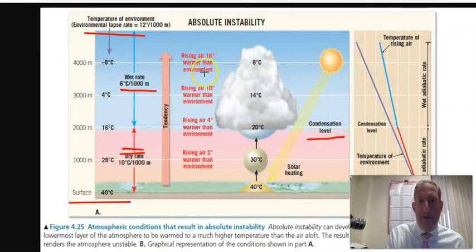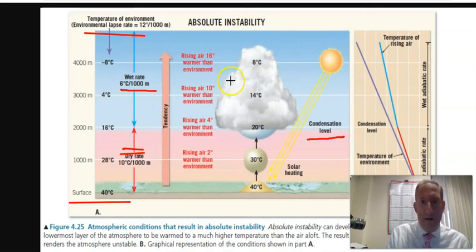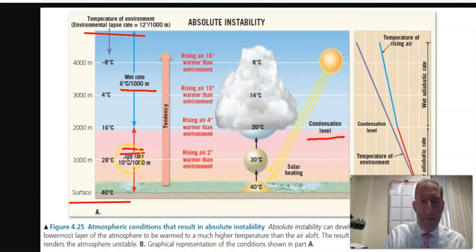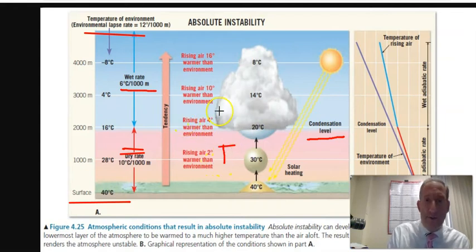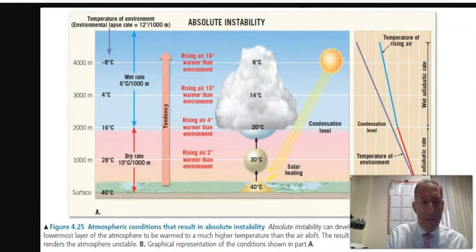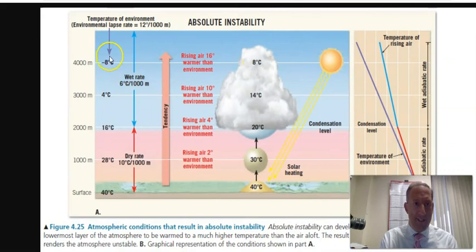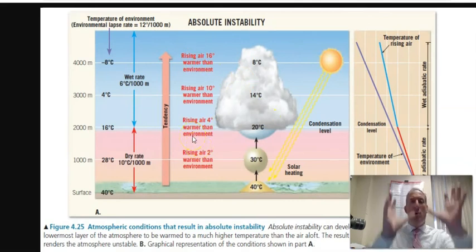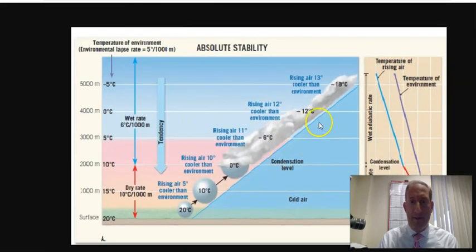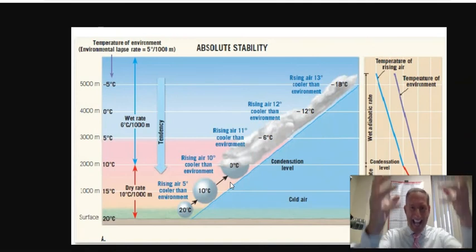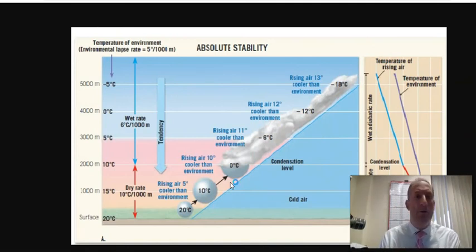With those five values you can fill in all the numbers and determine stability at each level. Remember: if the air parcel is warmer than the environment, air rises — unstable. If the air parcel is colder than the environment, air sinks — stable. In an unstable environment the air parcel is warmer and more buoyant. In a stable air mass the air parcel is colder, denser, and sinks.